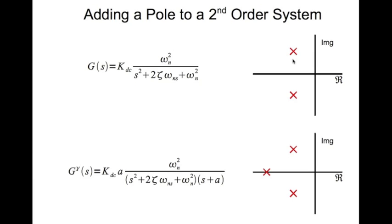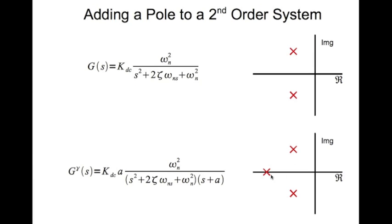Now if we add a pole at location a, this is how the transfer function changes. That's the pole. Now I had multiplied this K_DC by a to maintain the DC gain. If you look at the DC gain of both these systems, it is equal to K_DC. The DC gain should not change.